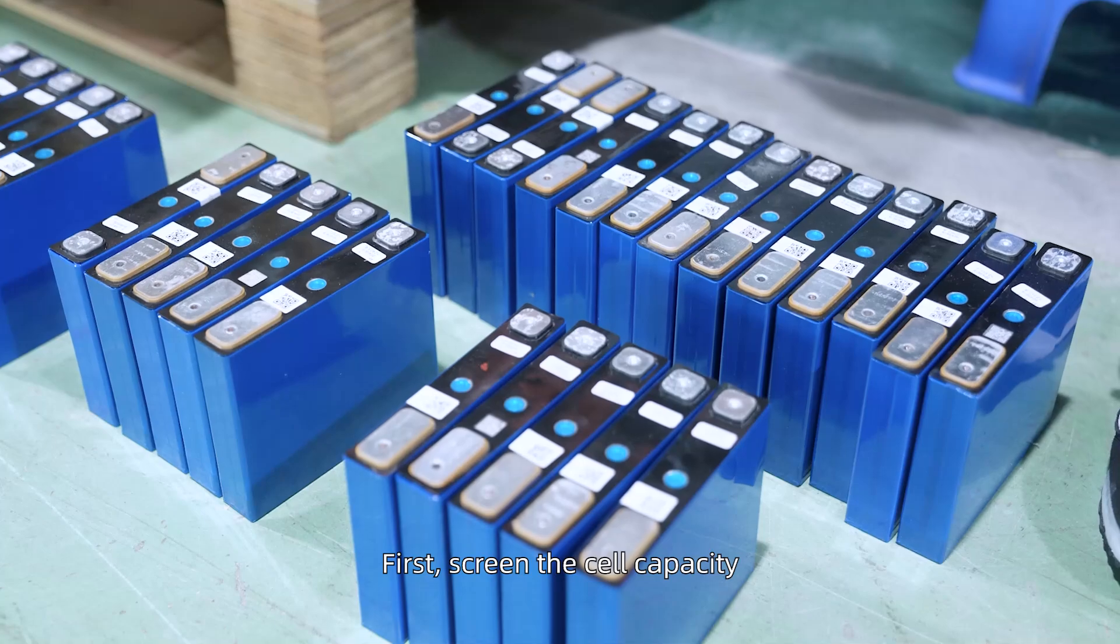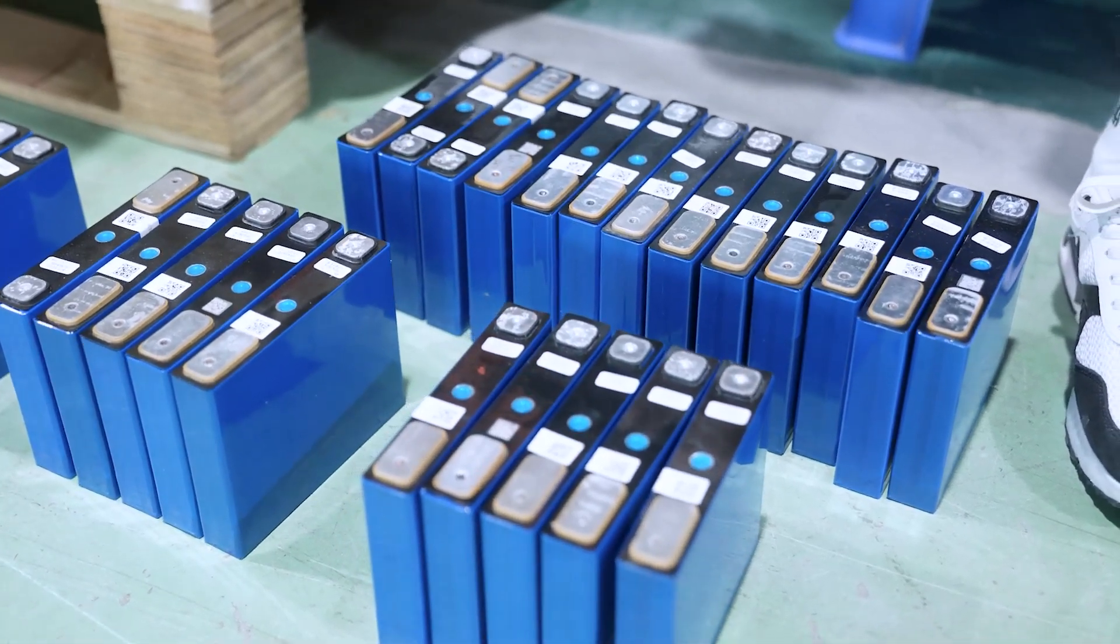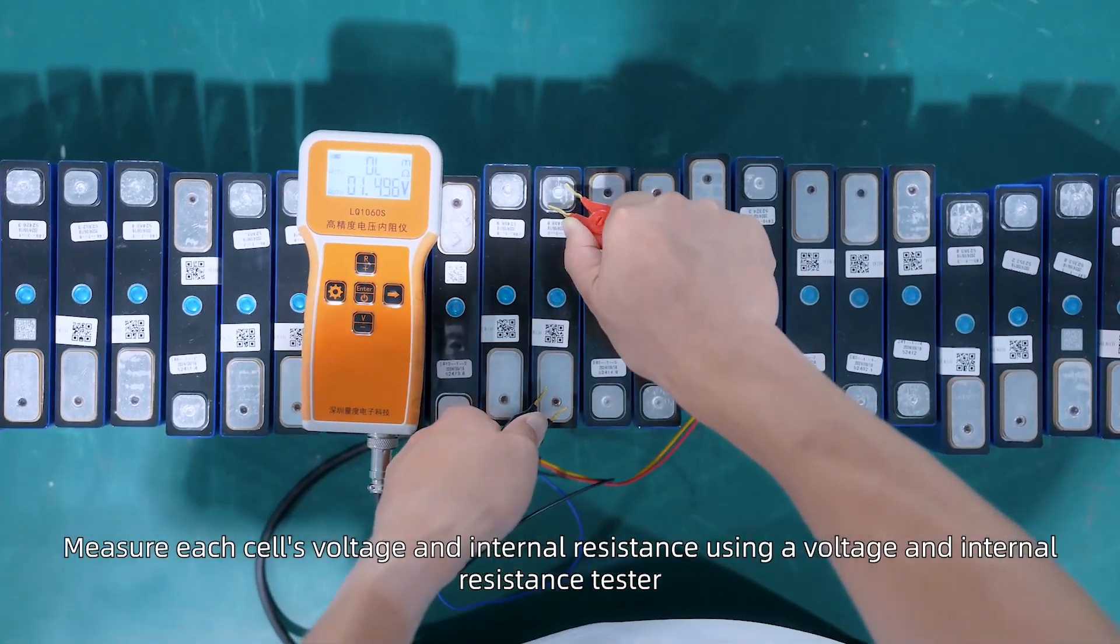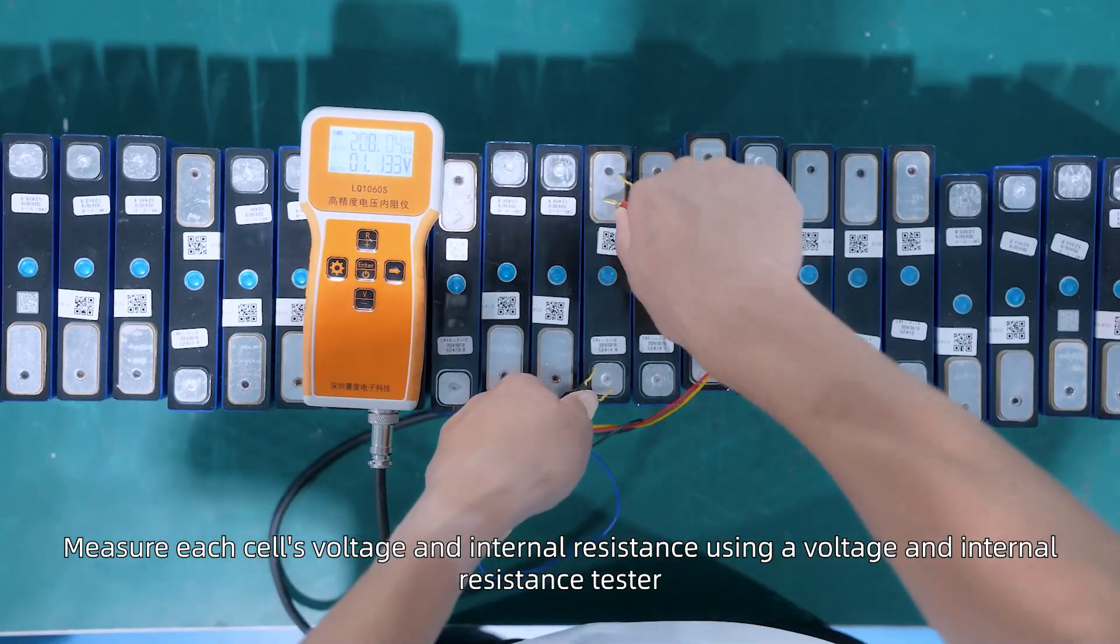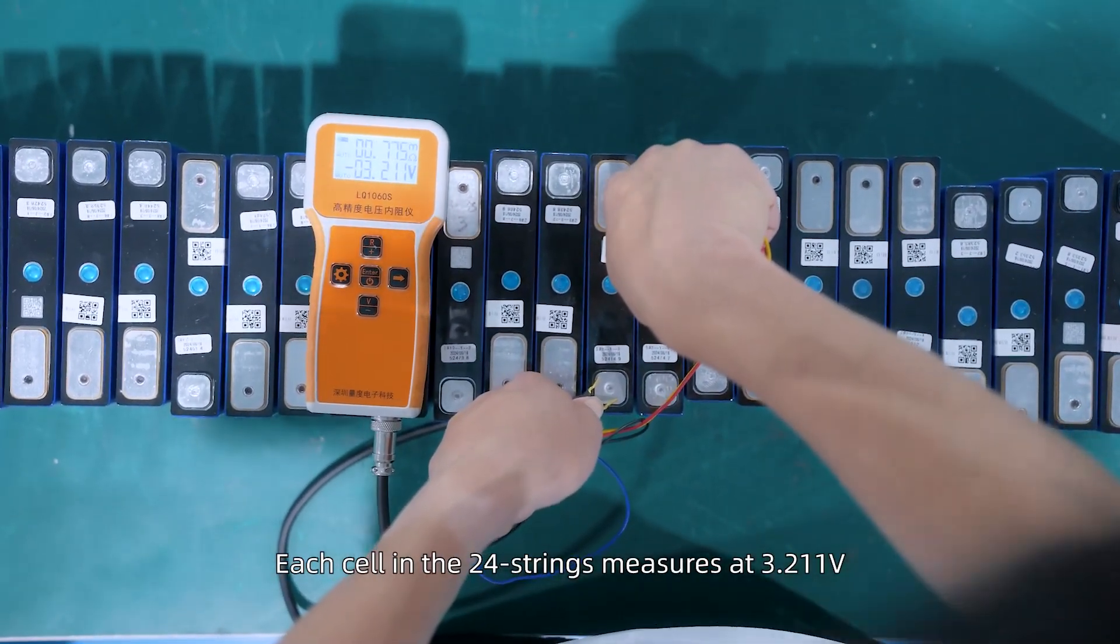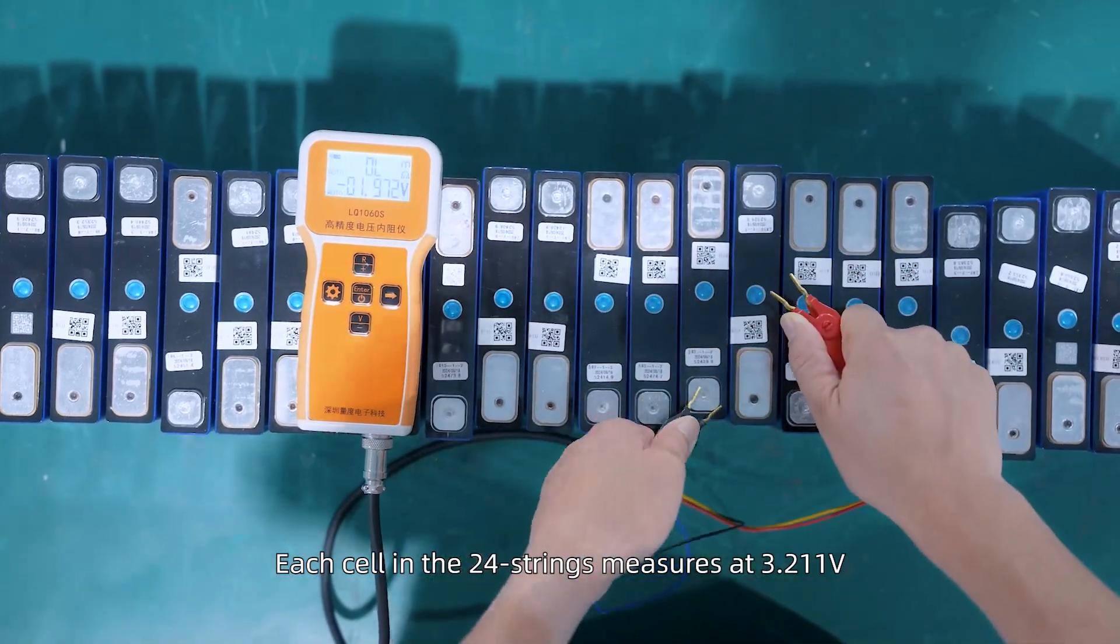First, screen the cell capacity. Measure each cell's voltage and internal resistance using the voltage and internal resistance tester. Each cell in the 24 string measures at 3.211V.